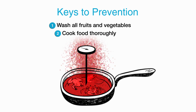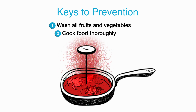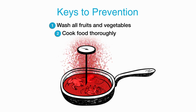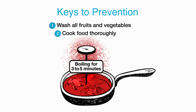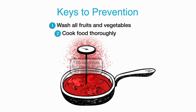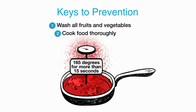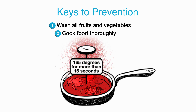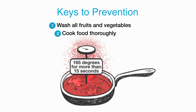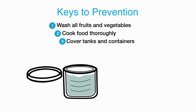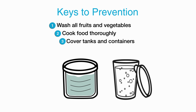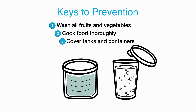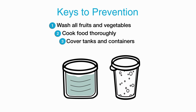Check carefully for slugs and snails. Cook food thoroughly. Cook prawns, frogs, snails, and crabs by boiling for 3 to 5 minutes or heating to 165 degrees Fahrenheit for at least 15 seconds. Cover and protect your catchment tank or other water source. Always cover your beverage to prevent slugs and snails from crawling in.